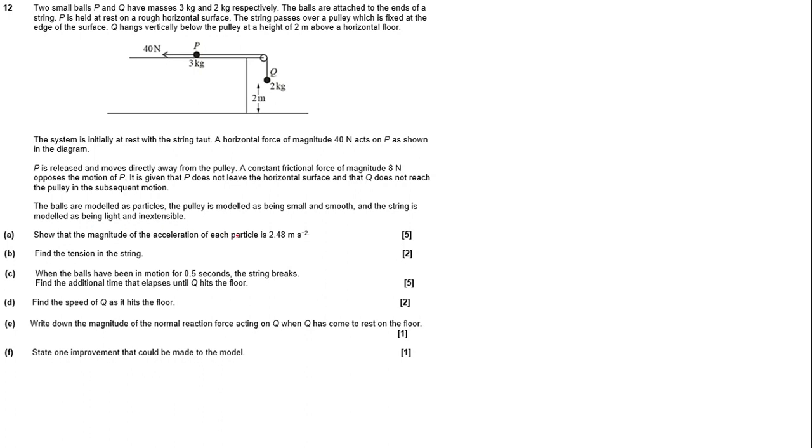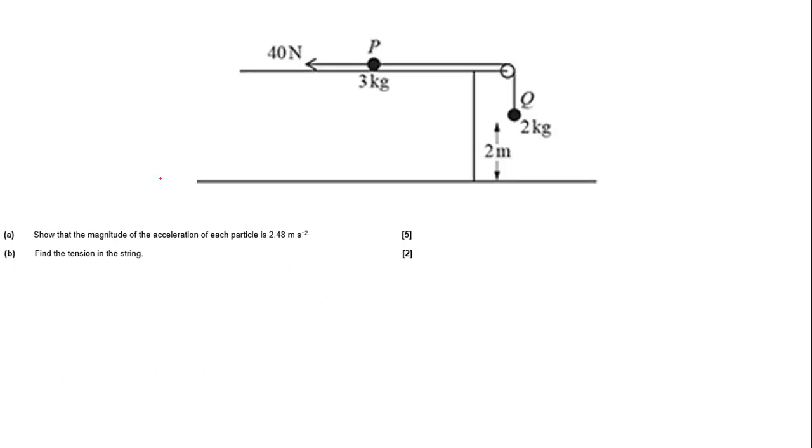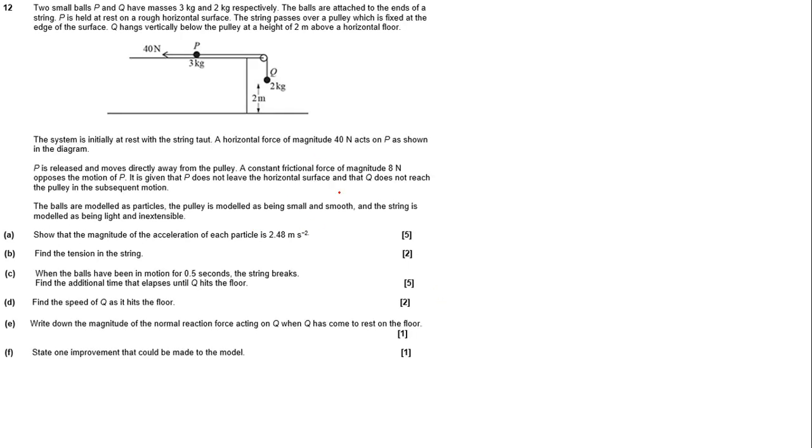Show that the magnitude of acceleration of each particle is 2.48. There's a reason that tells you the value here. By telling you the value, it allows you to do all the other questions B, C and D, so that you can still acquire 14 marks if you don't know how to show the acceleration as that. But let's actually just negate that. We're going to pretend it doesn't tell us that information. One thing we'll notice is actually there's something missing. It's the fact that since this is a rough horizontal surface, a constant frictional force of 8 newtons opposes the motion of P.